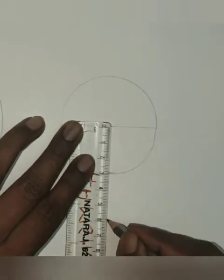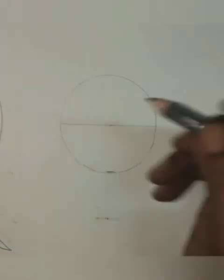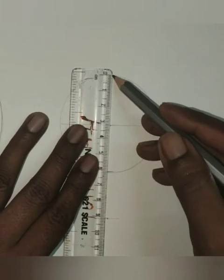Now we will draw the boy picture. Draw a circle and divide it into four parts.